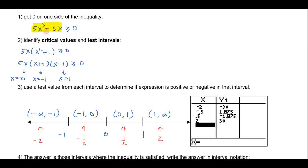If I plug negative 2 into the factored form 5x(x+1)(x-1), I get 5 — something positive — times negative 2, which is negative. Then negative 2 plus 1 is negative 1, something negative. And negative 2 minus 1 is negative 3, something negative. So if I multiply all those: 5 times negative 2 is negative 10, times negative 1 is positive 10, times negative 3 is negative 30. I don't even care that it's negative 30 — all I care is that it's negative. A positive times a negative times a negative times a negative gives something negative.